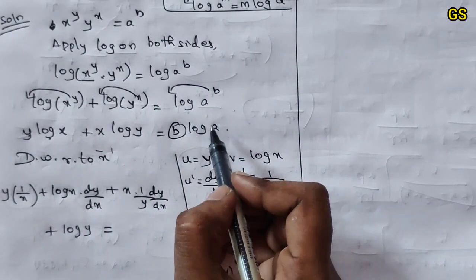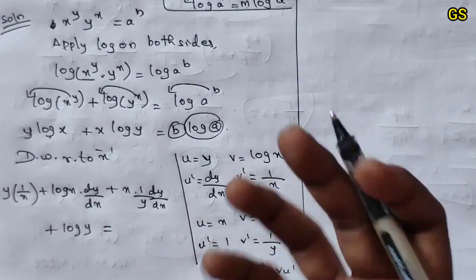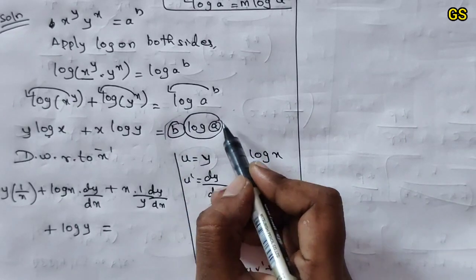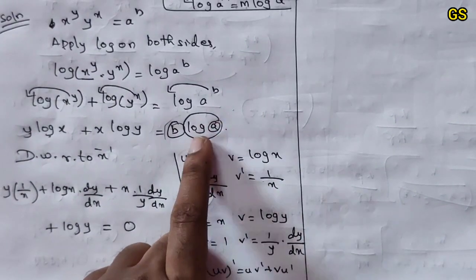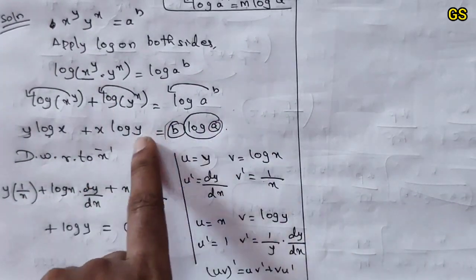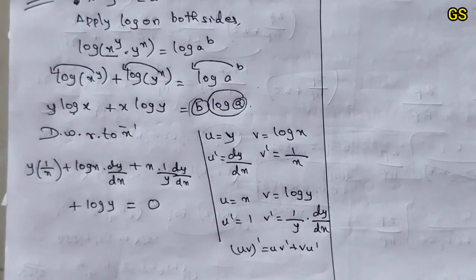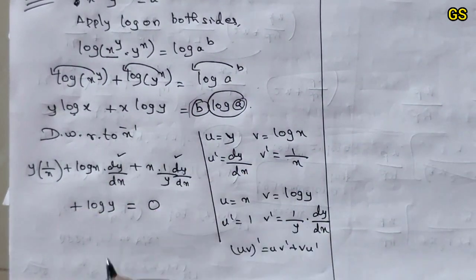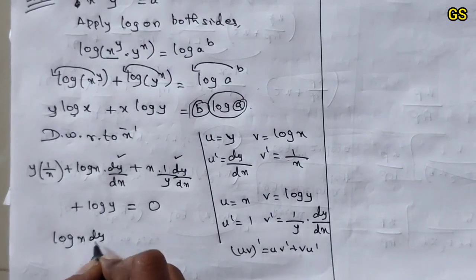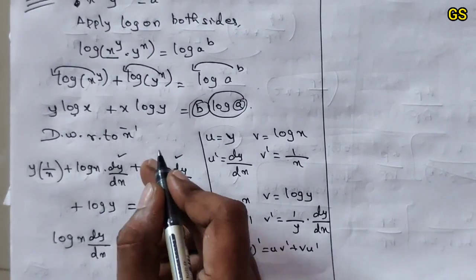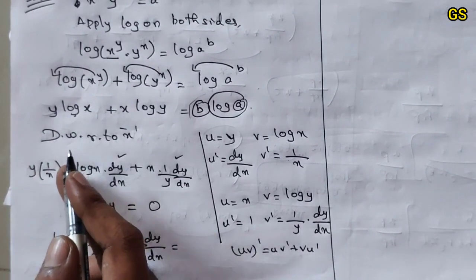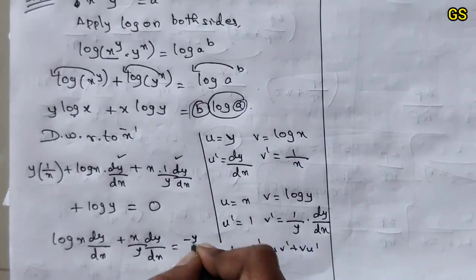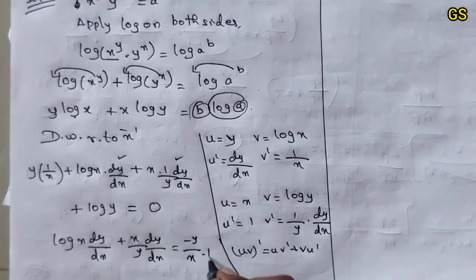The right-hand side b log a is a constant, so its derivative is 0. Now rearranging: log x dy/dx plus x/y dy/dx is equal to y/x minus log y. So we have the dy/dx terms on the left and remaining terms on the right, giving minus log y.